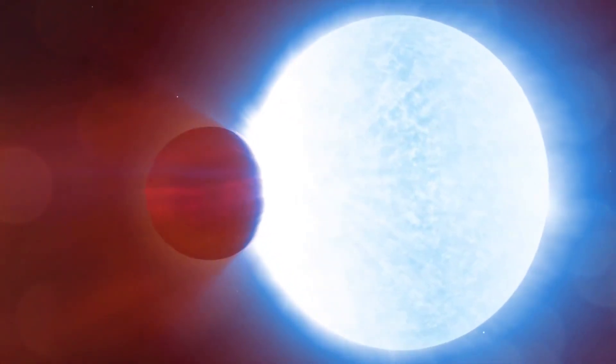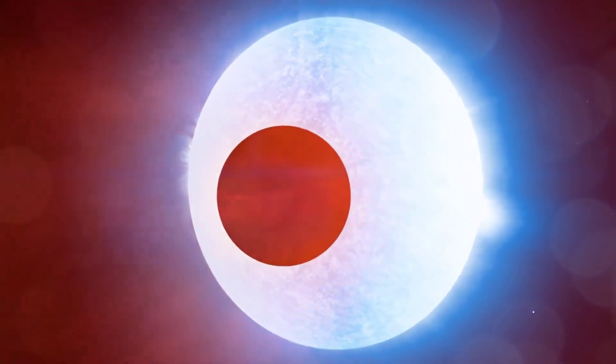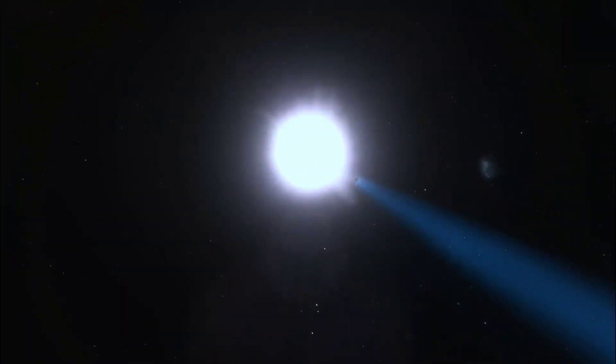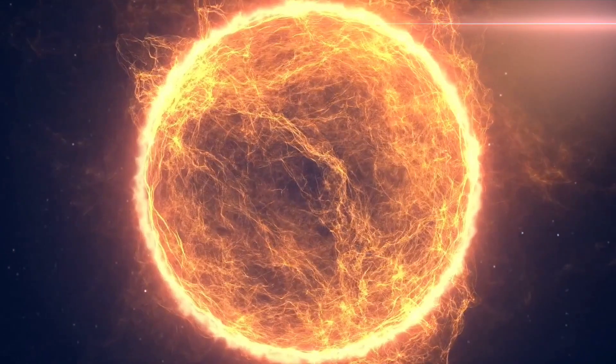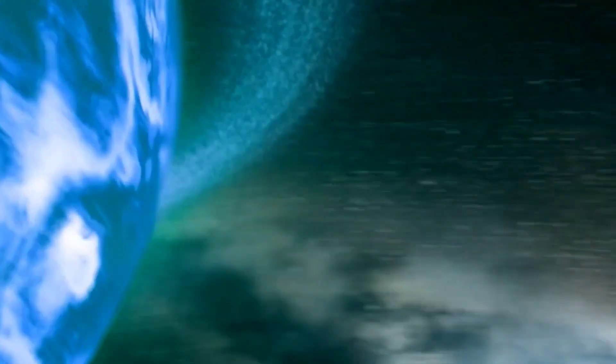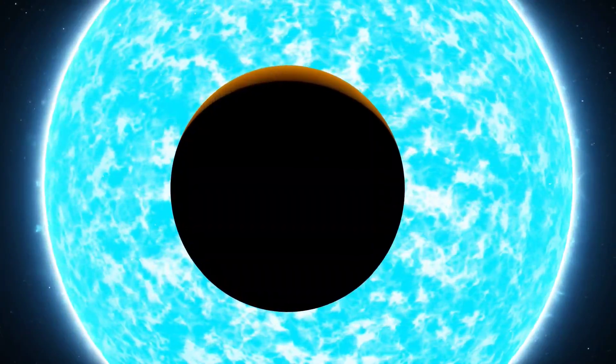The planet is so close to its star that it is tidally locked, which means that one side of KELT-9b is always facing the host star, and the other side is always facing away. The scorching temperatures on the day side of KELT-9b are enough to vaporize metals in the planet's atmosphere, including iron and titanium. This vapor causes a tail-like plasma stream behind the exoplanet that reaches millions of kilometers into space.